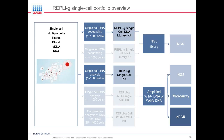The RepliG single cell kit is a whole genome amplification method using one to one thousand cells as starting material. The method uses the Phi29 polymerase, which has high proofreading activity and, very importantly, a strong DNA strand displacement activity, which is highly suitable to run through hairpin structures. You can start with single cells directly, so no DNA preparation is necessary. The RepliG single cell library kit couples WGA and NGS library preparation for NGS.